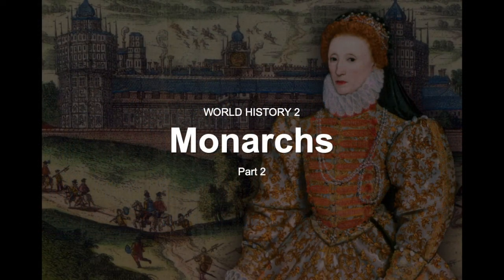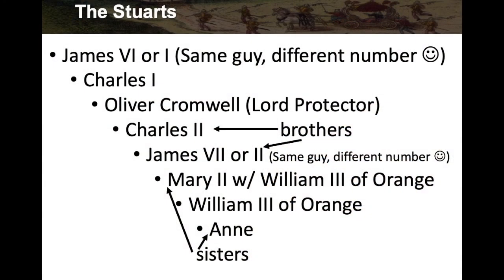Okay class, we're going to now have the PowerPoint on Monarchs Part 2. We'll be talking about the House of Stuarts, the next house after the House of Tudors. The first monarch after Elizabeth I was James VI or James I. James VI was the king of Scotland, but when he became the king of England he was renamed James I — same guy, different number. The monarchs of Scotland were separate from the monarchs of England until the Stuarts.